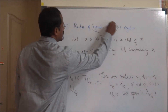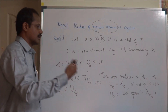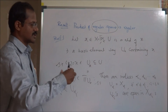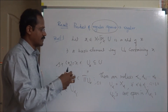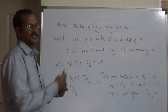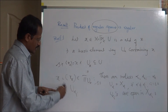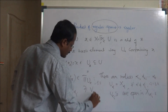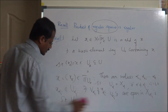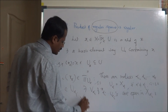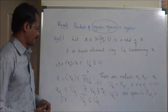Now we apply the regularity characterization to each factor space X_α_i. Each X_α_i is regular, hence it is a T1 space where every singleton set is closed. Therefore, for the neighborhood U_α_i of the point x_α_i, there exists another neighborhood V_α_i of x_α_i such that the closure of V_α_i is contained in U_α_i. This holds for every i = 1, 2, …, k.